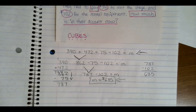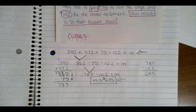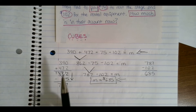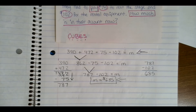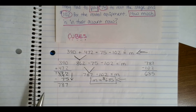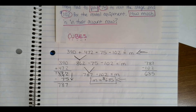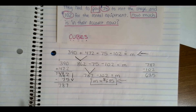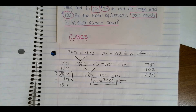This is a really good example of a multi-step word problem — we had to add once and subtract twice. As you're going through your worksheet today, I have an outline set up for you, and I'm going to show you that next.